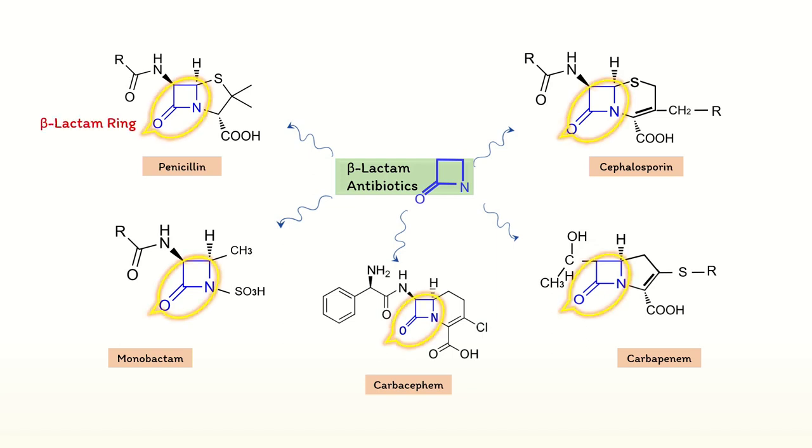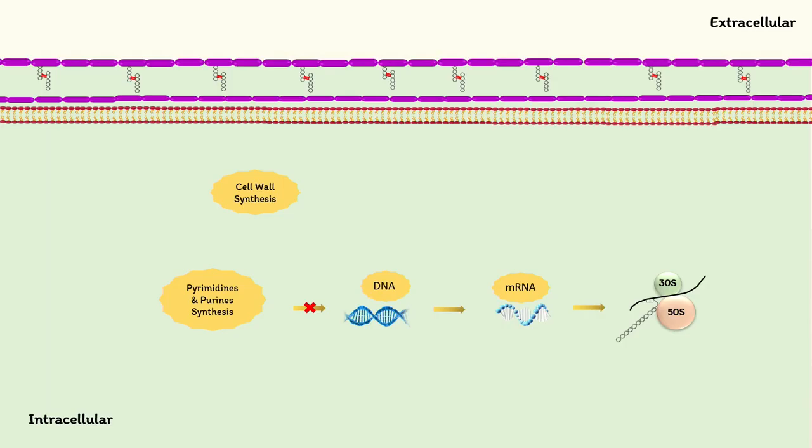First in the beta-lactam category, we have penicillins. Most of us and our grandmas are aware of this antibiotic. Penicillins work by inhibiting the peptidoglycan cross-linkage in the bacterial cell wall. The peptidoglycan layer is important for cell wall structural integrity, and without it, the bacteria will die.